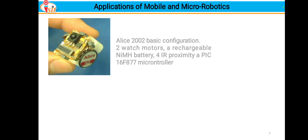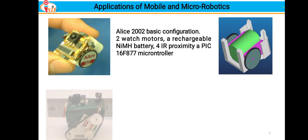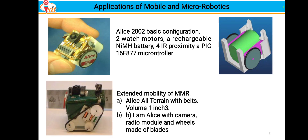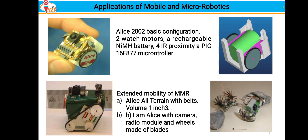These are some glimpses taken from an IEEE research paper. The ALLIES 2002 base configuration of one micro robot features two watch motors, a rechargeable NiMH battery, IR infrared proximity sensor, and a PIC16F877 microcontroller. The second picture shows extended mobility of MMR. The first image shows ALLIES all-terrain with belts in a 1 cubic inch volume, and the last figure is the ALLIES configuration with camera, radio module, and wheel made of blades.